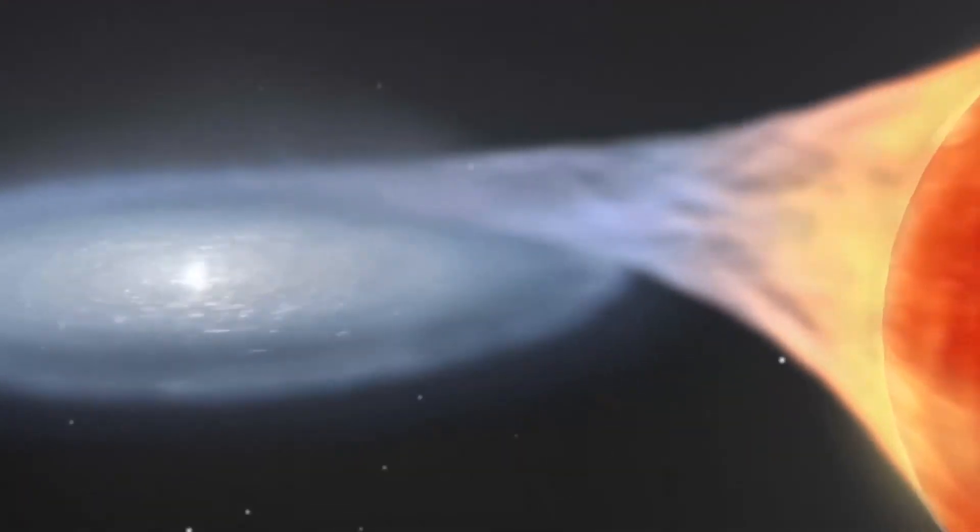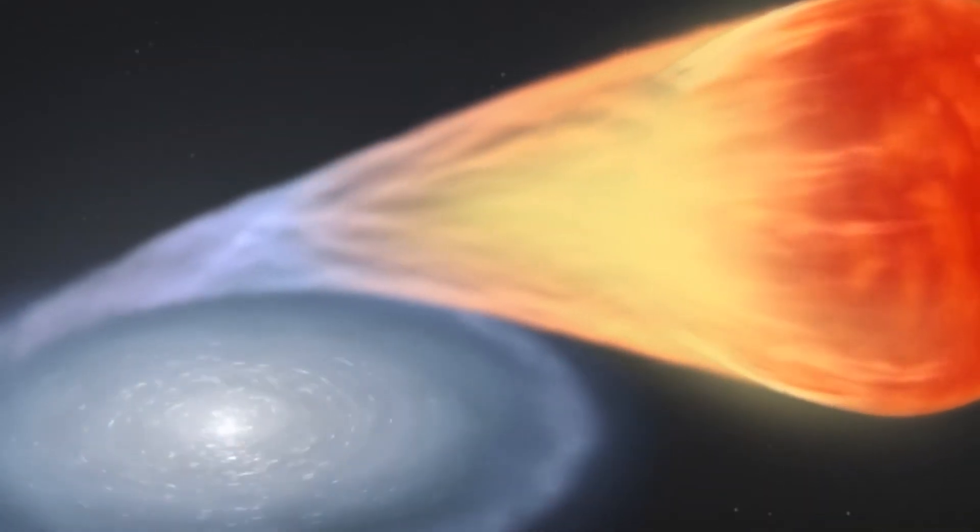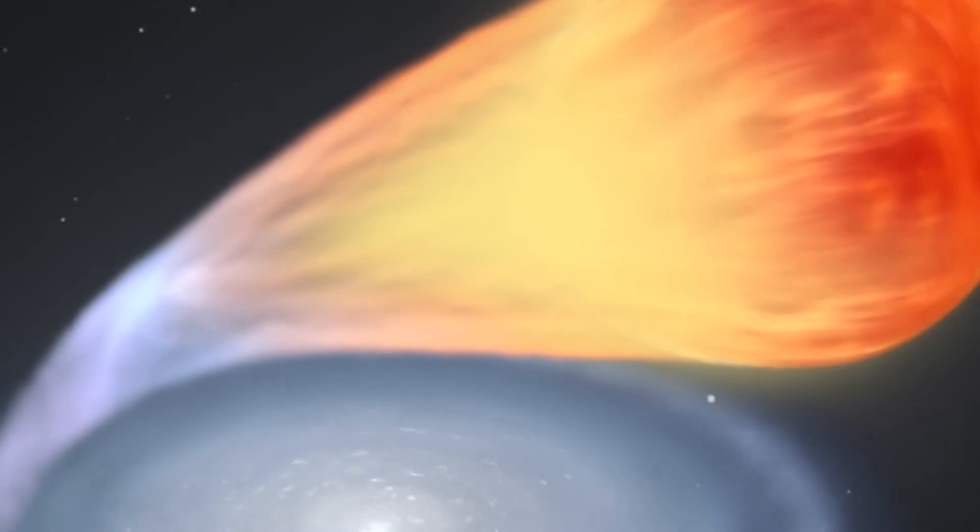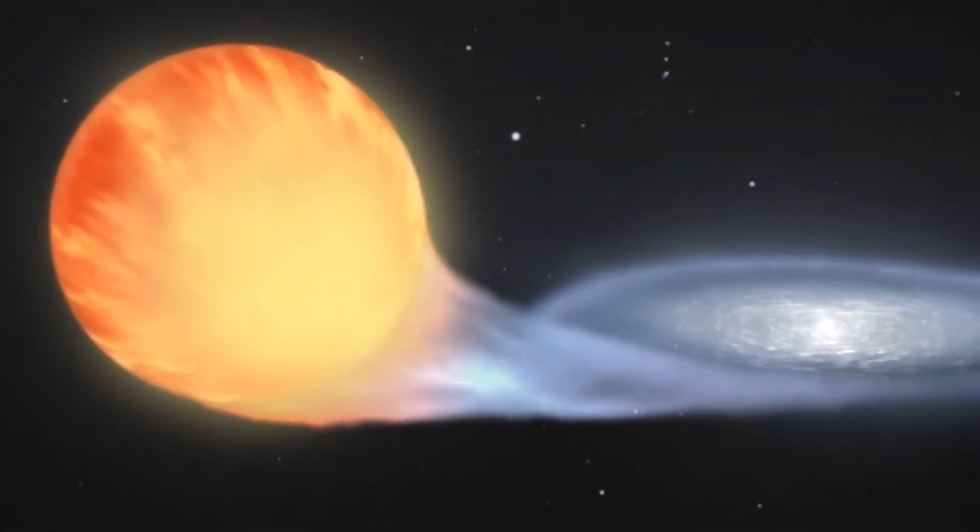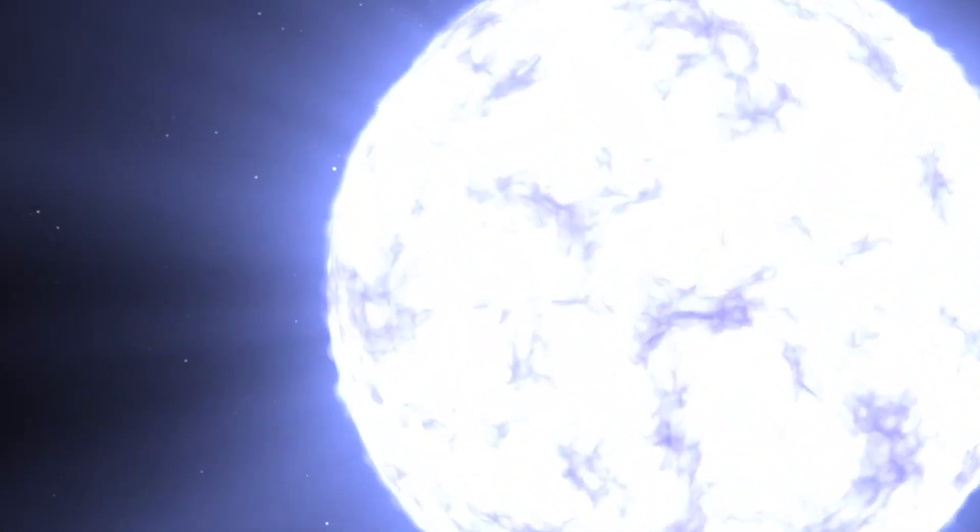There's more. Sadly, one day the white dwarf will have leeched so much of its partner's right layers that it will finally explode forever. Sending its partner flying off into the galaxy while it collapses into a dark remnant of its former self.